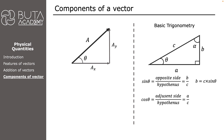So, cosine of theta is equal to A over C. We can rearrange the equation to A equals C times cosine theta.